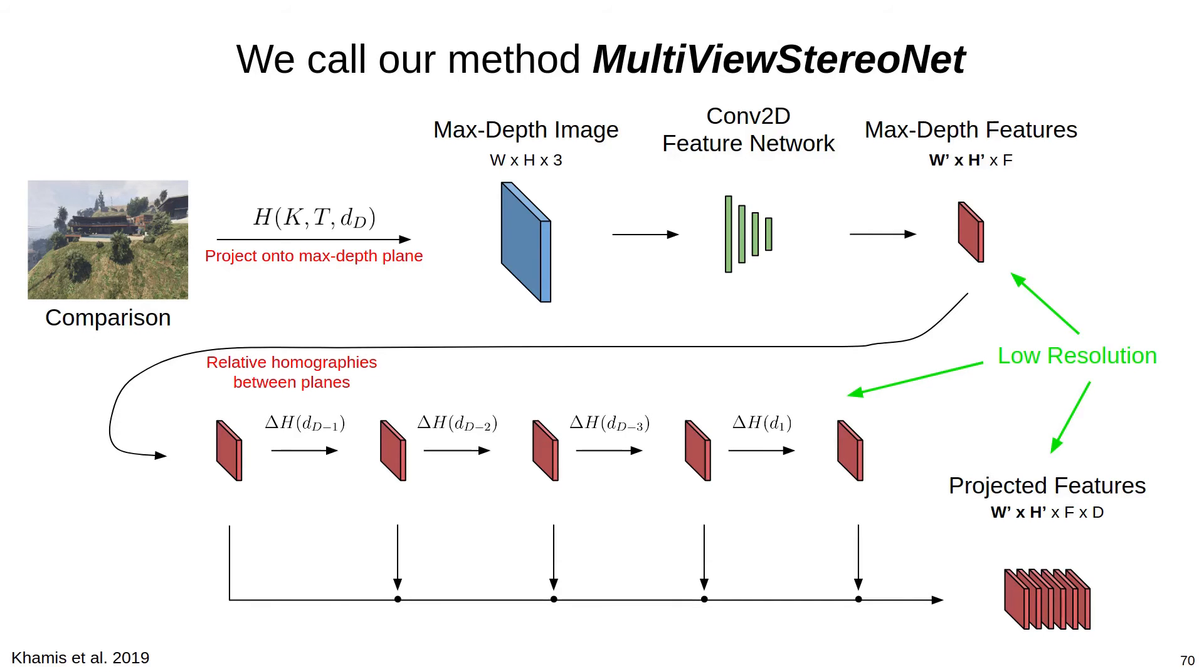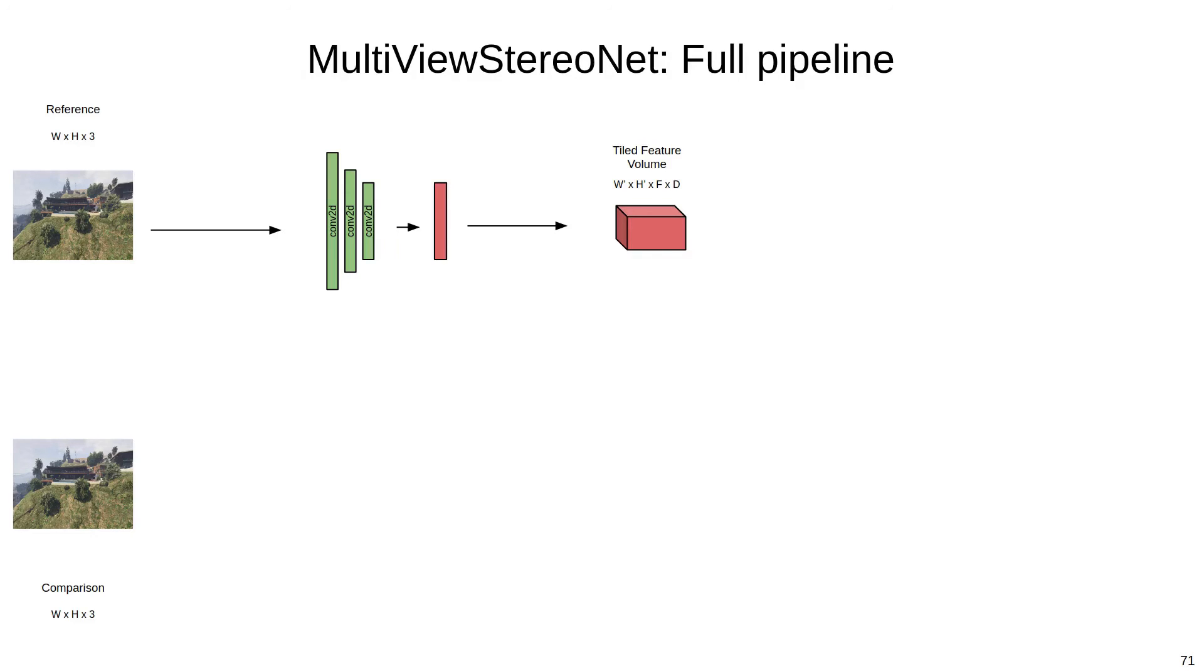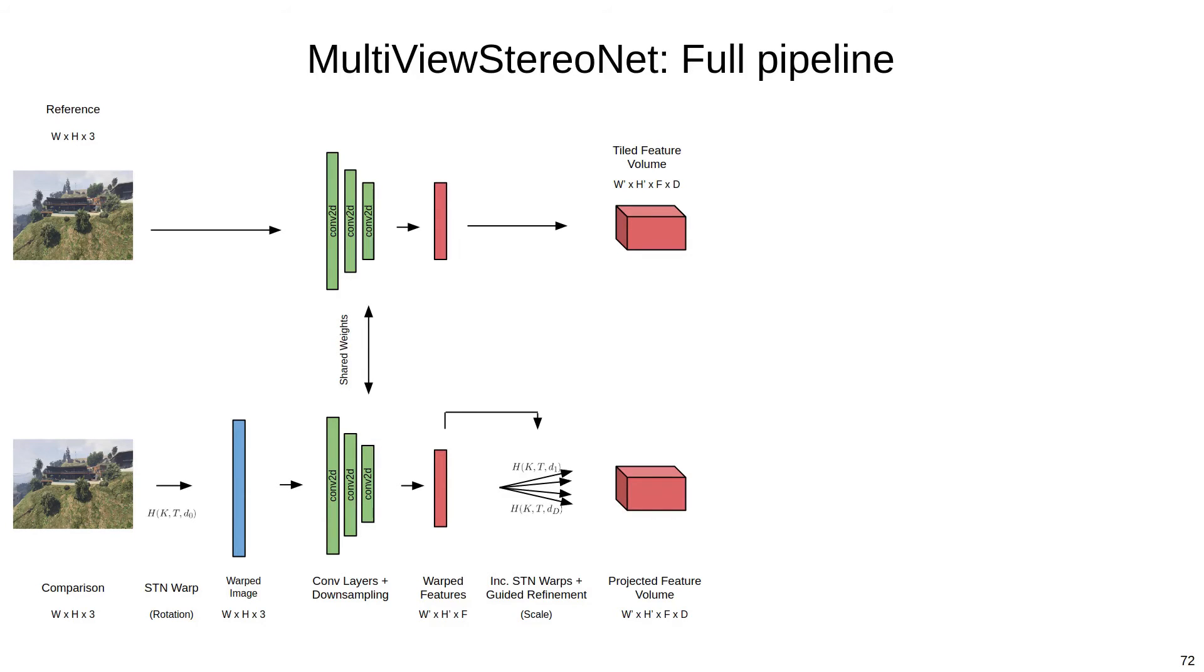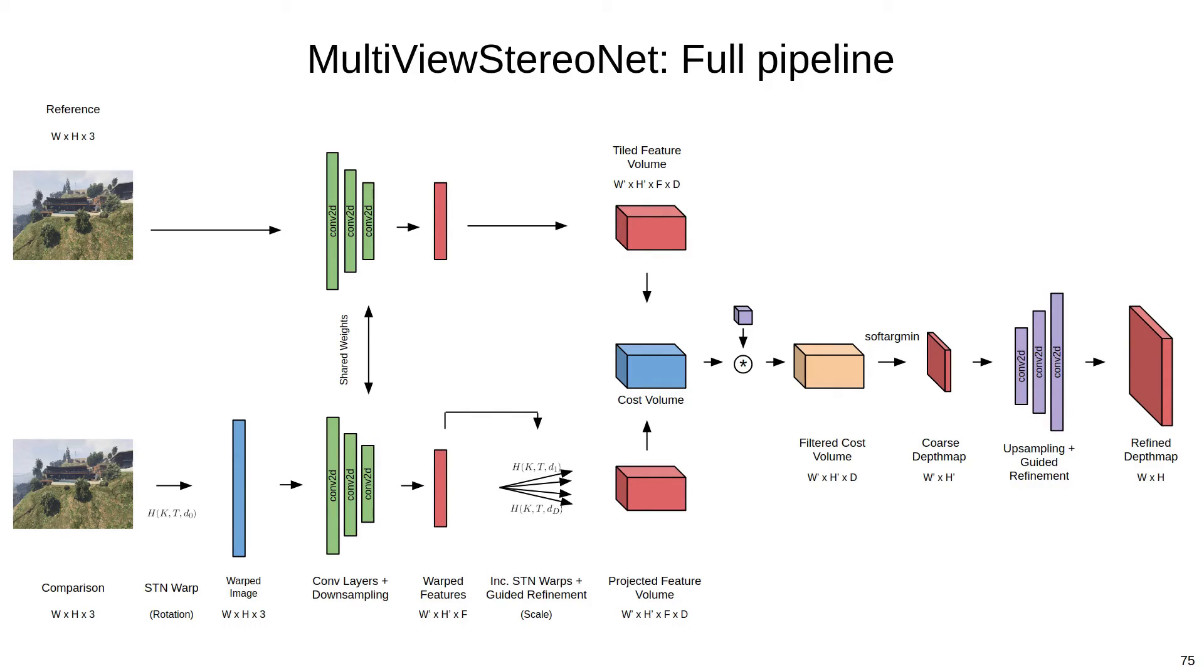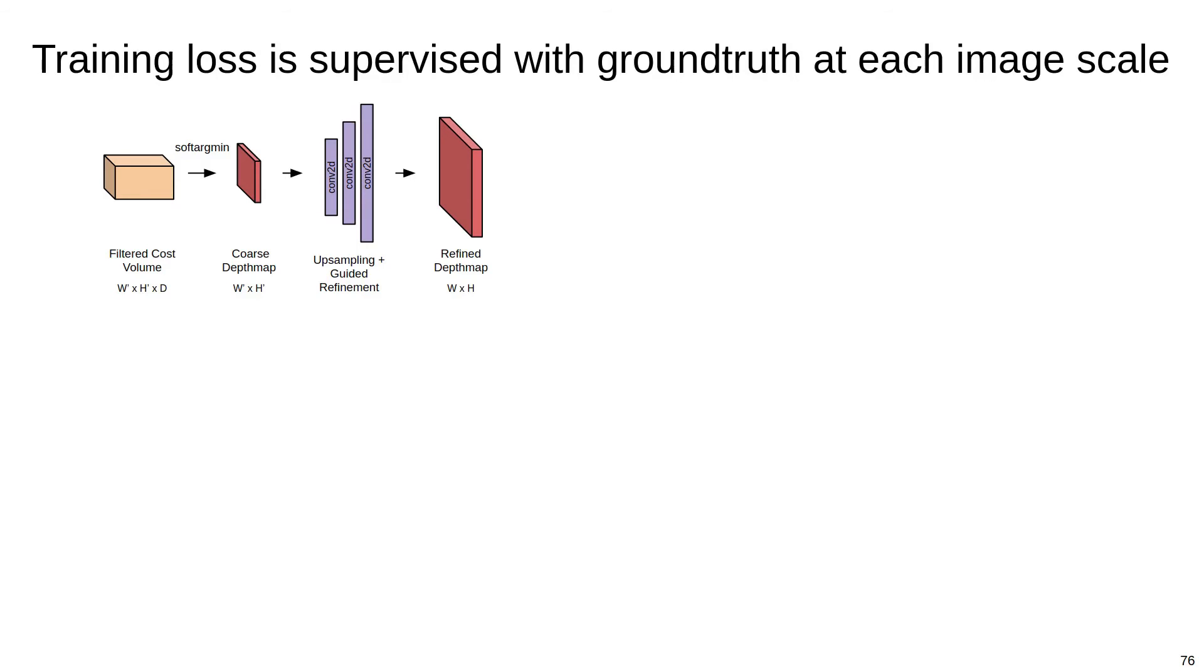We call our full method Multiview StereoNet, and we'll briefly go over the full pipeline. In the full pipeline, we extract features from the reference image using 2D convolutions and then tile the feature map to create a feature volume. Features from the comparison images are extracted using the proposed viewpoint compensated incremental feature extractor. The difference between these two feature volumes yields a low resolution cost volume. After filtering the volume, we use the differentiable soft argmin operator to extract the min-cost depth map. This final depth map will be low resolution, however, so we apply a series of upsampling and guided refinement layers to produce the final refined depth map at the full resolution. The training loss for the network is generated by comparing the series of refined depth maps to the ground truth depth labels.